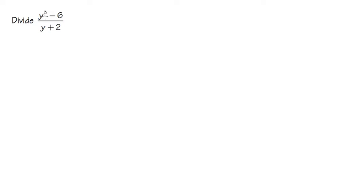Here we are going to divide y to the third power minus 6 over y plus 2. As we can see, we have two terms on the bottom, namely y plus 2. Therefore, we have to use long division for this. But also because we just have the 1 in front of the y, we can actually use synthetic division in this case as well. I'm going to show you both in this video, beginning with long division first.